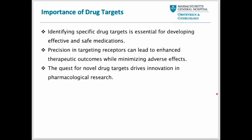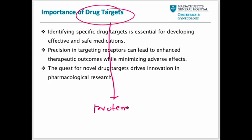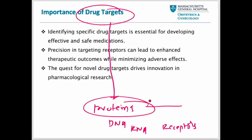Drug targets are mainly important for developing effective and safe medications; they help minimize adverse effects. Most drug targets are proteins, but sometimes they can also be lipids such as low-density lipoproteins, or DNA. The major drug targets are proteins, DNA, RNA, and receptors — and receptors are mostly proteins. Drugs bind with receptors, proteins, or DNA/RNA to show their pharmacological activity.